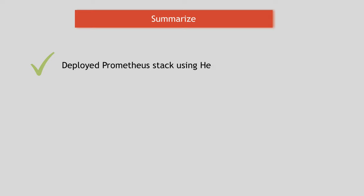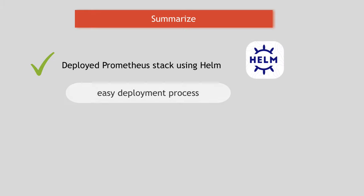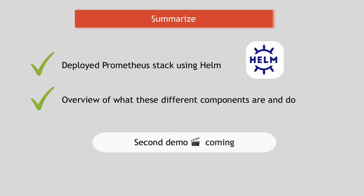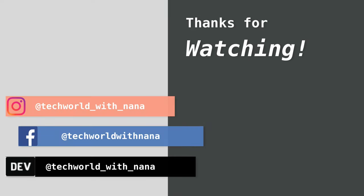To summarize: we deployed the whole Prometheus monitoring stack using Helm. The deployment process was easy and straightforward — just one command that creates the whole array of components that make up the stack. You saw a brief overview of what these different components are and what they do. In later videos, I'll make a Prometheus demo where we configure an additional metrics endpoint for a database application running in the cluster — showing how you can monitor different services running in the cluster and also your own application by exposing a metrics endpoint. Thank you for watching and see you in the next video.